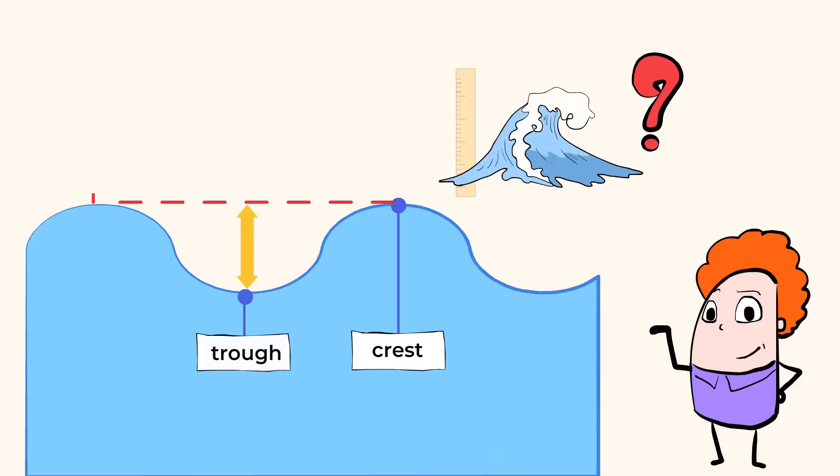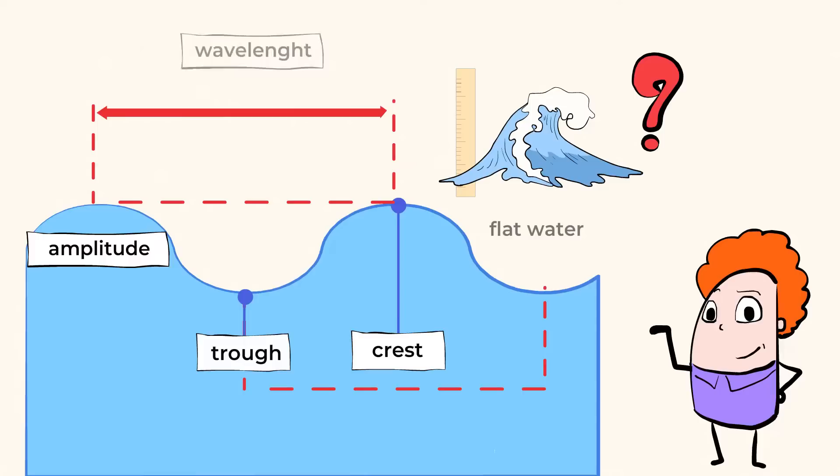And this is called amplitude. We measure the amplitude of a wave by looking at the distance that the wave dips down or rises above the flat, calm water. We can also measure the distance between two crests or between two troughs to find out the wavelength.